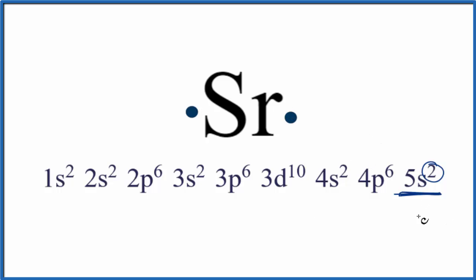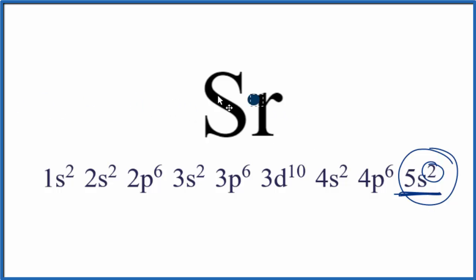If we wanted to write the Lewis structure for the strontium ion, Sr2+, we would remove these two valence electrons. There's one, two, and since electrons are negative, we just remove two negative charges — we have two plus. So this would be the Lewis structure for the strontium ion. Sometimes you'll see brackets around the element symbol, other times you won't.